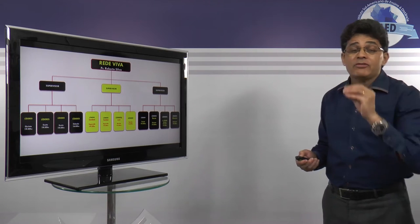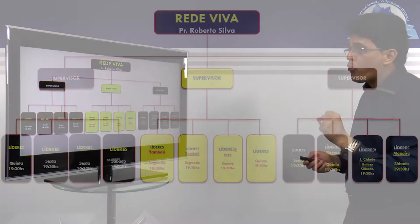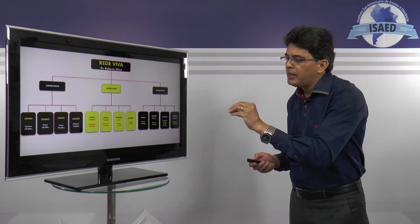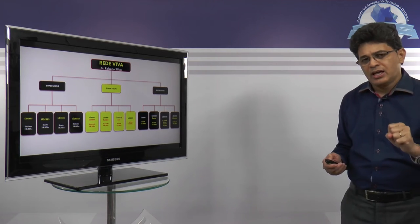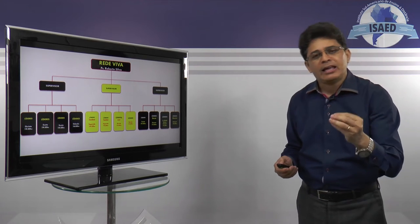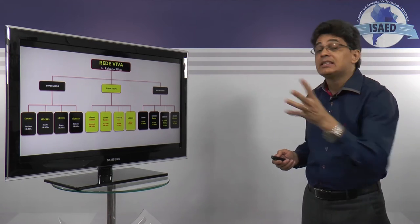Para que você possa entender melhor aquilo que eu estou falando, veja bem, eu como pastor de rede tenho abaixo os meus supervisores, abaixo deles os líderes. Então, eu fiz aqui uma ilustração para que você possa compreender que um supervisor, ele cuidando de quatro pessoas, ou no máximo cinco pessoas, é o suficiente para que ele possa se reunir, orar, ajudar exatamente esses líderes.